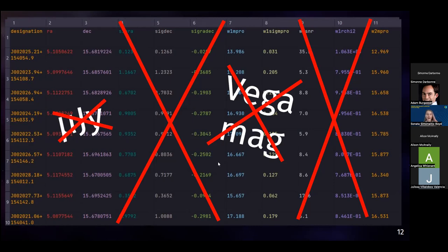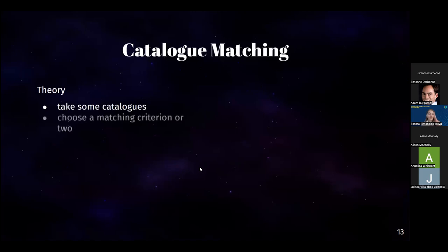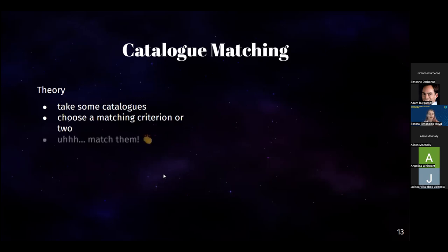Before I could begin analysis, I had to get all the catalogs into one big catalog, which is where catalog matching comes in. In theory, catalog matching sounds pretty straightforward: you take some catalogs — I've got four to mash together — then you choose some sort of criteria by which to match them, for example object name. Since naming conventions might differ across instruments — and spoiler alert, they do — maybe something more standardized like coordinates. Then you match the catalogs together. There are built-in functions in AstroPy which will do the matching for you, and all you have to do is supply the catalogs you want matched, the matching criteria, and maybe some parameters describing the way you want them matched.